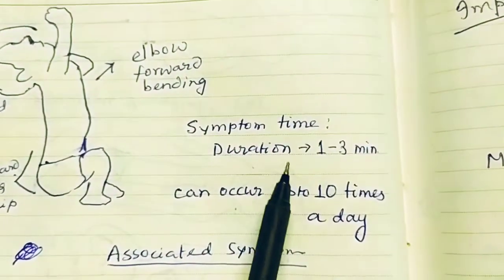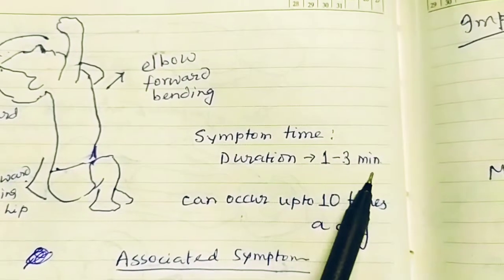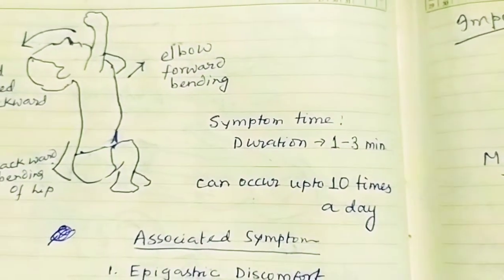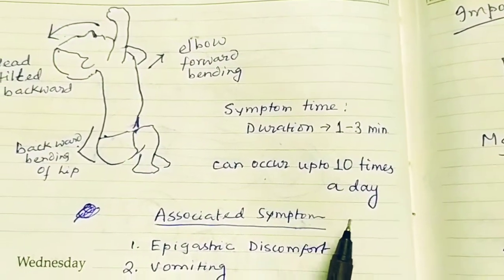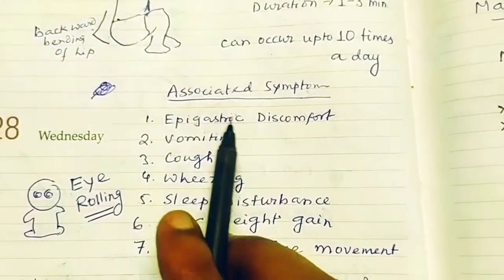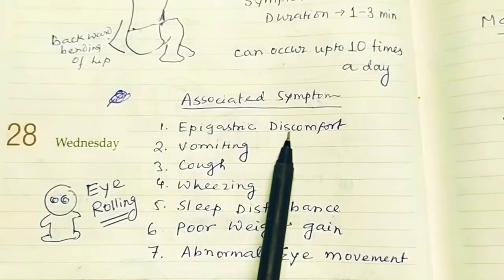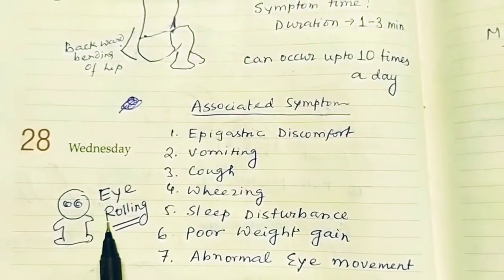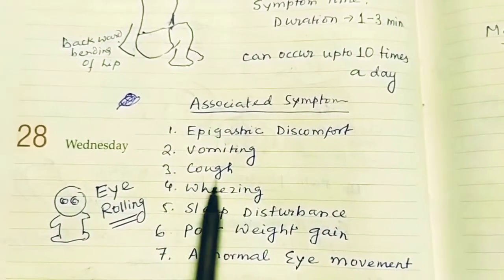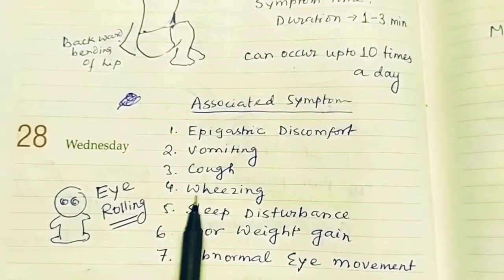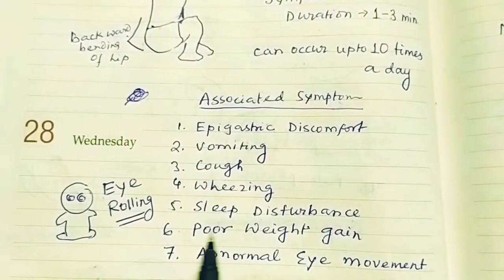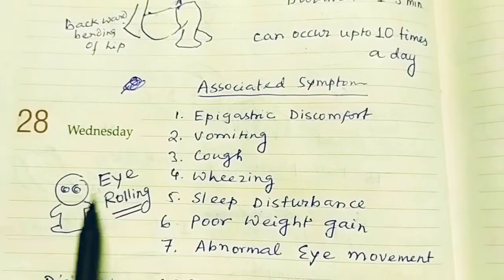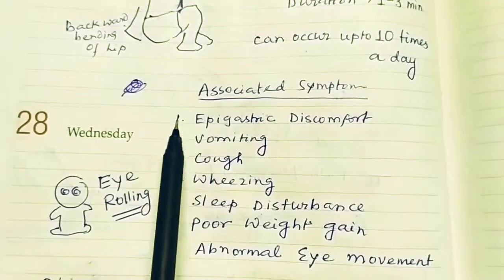The duration of each episode is one to three minutes, and it can occur up to 10 times a day. Associated symptoms include: epigastric discomfort, vomiting, coughing, wheezing, sleep disturbance, poor weight gain, and abnormal eye movement — known as eye rolling. These are all associated symptoms of Sandifer Syndrome.